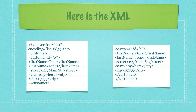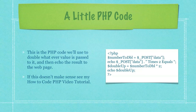This XML file is going to reside on a server and we are going to use jQuery and Ajax techniques to retrieve it and display it on the web page without a page reload. This is the PHP code we'll use to double whatever value is passed to it and then echo the result to the web page. If this doesn't make sense, see my how to code PHP video tutorial. It's pretty simple — we're just posting a value to this PHP file, it multiplies that value times two, and sends it right back to us. But you can do pretty much anything you want in your PHP script and send it back using the exact techniques you see here.